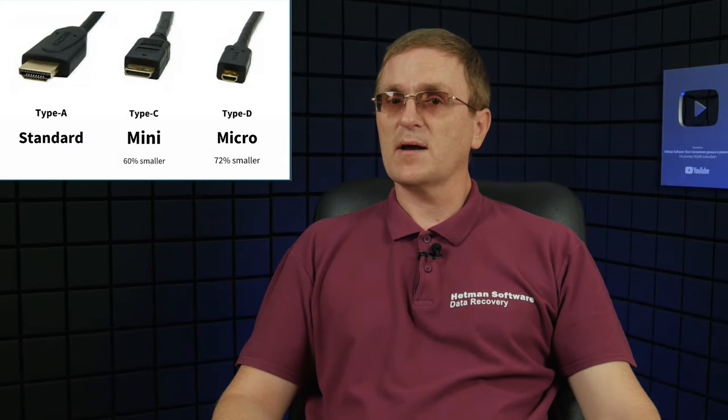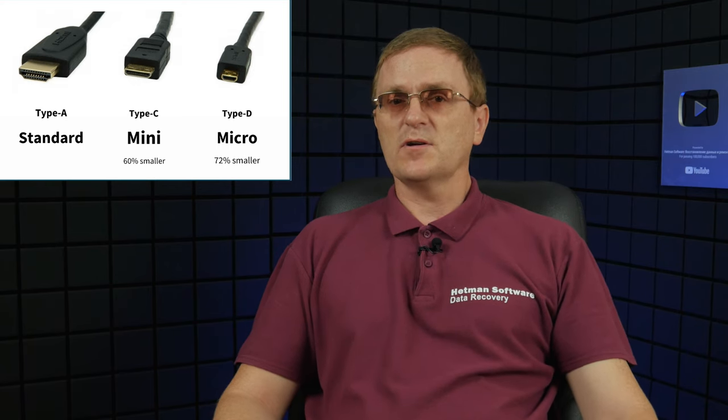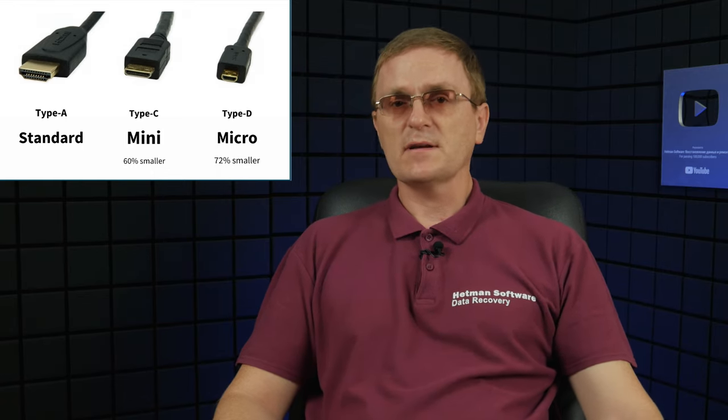HDMI Type C, also known as mini-HDMI, is smaller in size than Type A and is mostly used to connect smaller gadgets like cameras, smartphones, and tablets. HDMI Type D, also known as micro-HDMI, is even smaller and is meant for audio-video connectivity in small and portable devices like phones, tablets, and some camera modules when they are linked to other video devices. There are also HDMI cables version 2.1 that support higher bandwidths and transmit high-resolution signals including 4K and 8K video, sound formats like Dolby Atmos and DTS-X, HDR (High Dynamic Range), and so on.